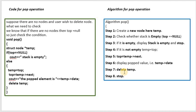Coming to the code — whatever you wrote in the algorithm, the same thing you have to write. First, create a new node: struct node* temp. Check whether top is null or not. If null, print 'stack is empty'. Else, assign temp = top, then top = temp->next, display the popped element as temp->data, and finally delete temp.